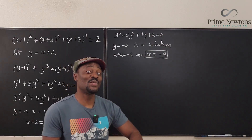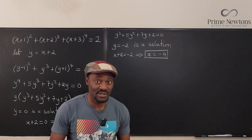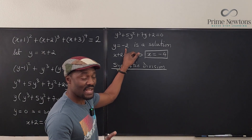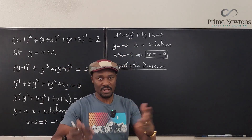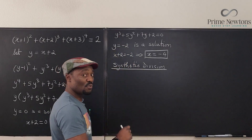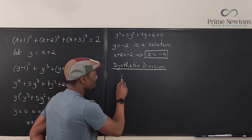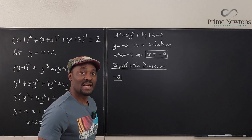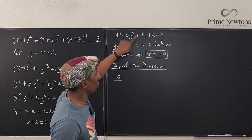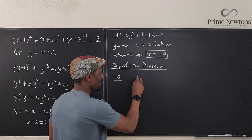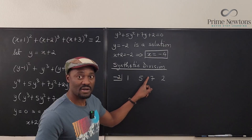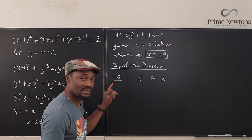The third technique we'll use is synthetic division. Since Y = −2 is a factor of the cubic Y³ + 5Y² + 7Y + 2, we divide by −2. Write the coefficients: 1, 5, 7, 2. This is cleaner than long division and you make fewer mistakes. Always put a zero below to start.